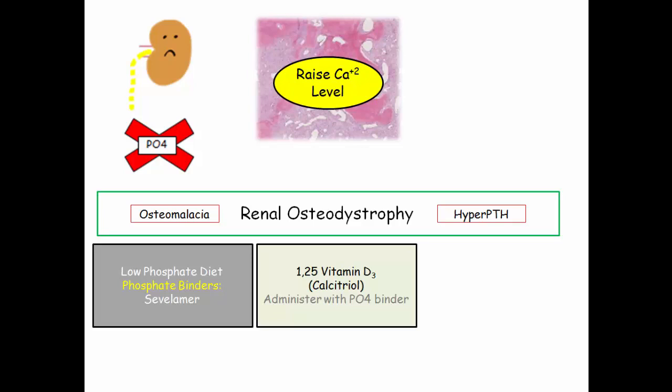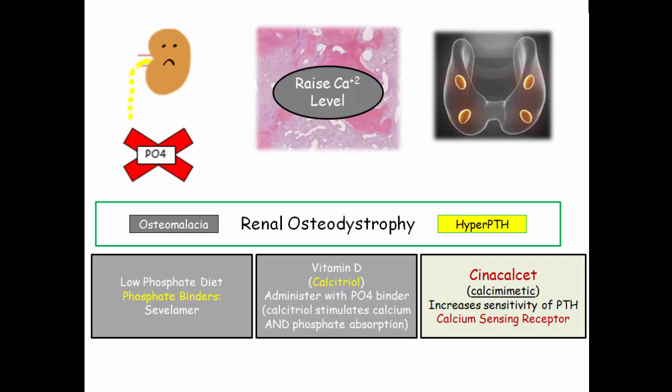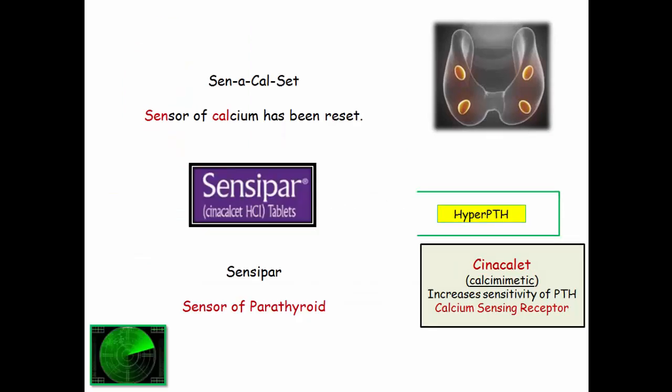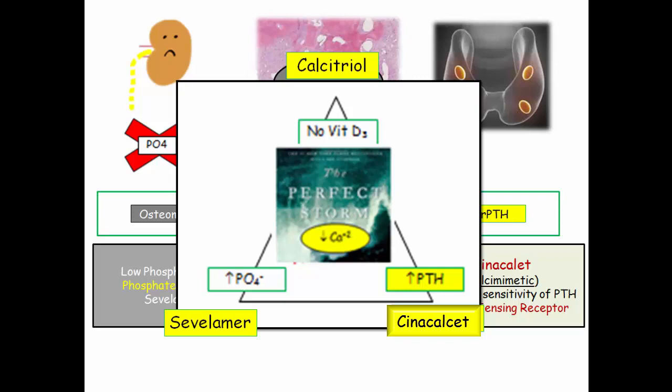With the high phosphate and low vitamin D addressed, the serum calcium level should rise. The third arm of therapy involves turning off the parathyroid, accomplished with the calcimimetic cinacalcet. This agent increases the sensitivity of the calcium-sensing receptor, essentially tricking the parathyroid into thinking all is well. By decreasing parathyroid secretion, bone resorption is mitigated. Cinacalcet — the sensor of calcium has been reset, or use the brand name Sensipar, as in sensor of the parathyroid. You should be familiar with its role as a calcimimetic. This triad of therapies represents the pharmacotherapeutic response to the perfect storm of pathophysiologic derangements.